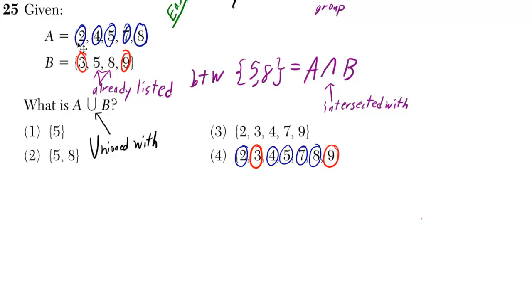What you need to do for a union is you need to list all your elements, but you never list elements that you've already listed. We never do that with sets.